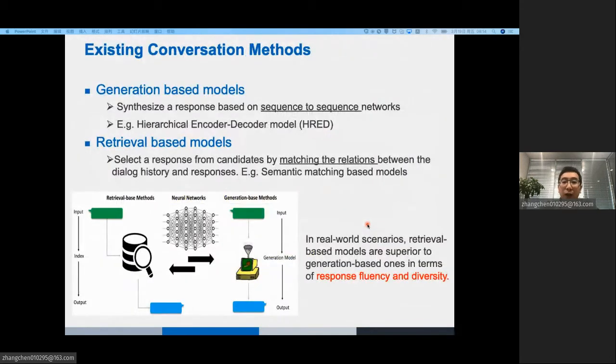Now we talk about existing conversation methods. Traditional models can be classified as generation-based and retrieval-based. The generation-based models generate a response based on sequence-to-sequence networks. The retrieval-based models select a response from a candidate pool by matching the relations between the dialogue history and the candidates. In real-world scenarios, retrieval-based models are superior to generation-based ones in response fluency and diversity.